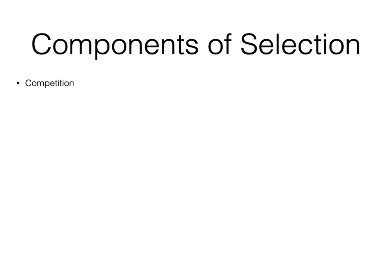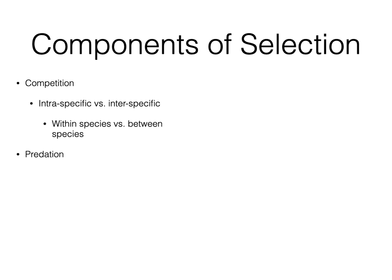Natural selection is a component of evolution, and now we'll discuss its components. What makes up this sorting process? First, competition — we can talk about intraspecific competition (within a species, like siblings fighting over a toy) versus interspecific competition (between species, like lions and hyenas fighting over a wildebeest). That distinction is really important. Another component of natural selection — another part of the sorting process that results in changes in allele frequencies — is predation.